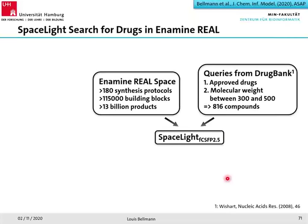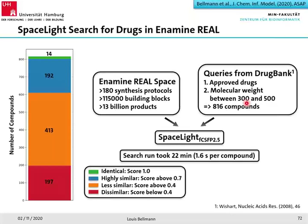Now we search in the REAL Space with multiple queries: all approved drugs from DrugBank with molecular weight between 300 and 500 Da — 860 compounds. The whole run took 22 minutes on the same computer, about 1.6 seconds per compound on average. Grouping these 860 compounds by their highest product score: 14 had a score of 1.0 — they are contained in REAL Space and could be ordered from Enamine.